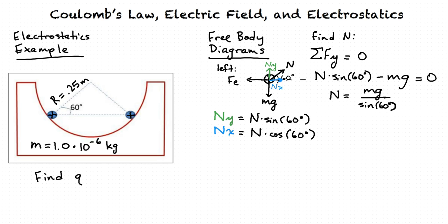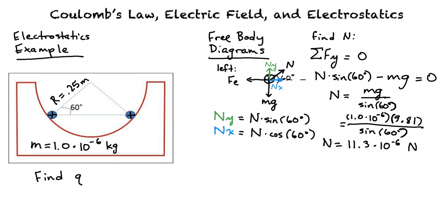Substituting in the given numbers — M equals 1.0×10⁻⁶ kg, g equals 9.81 m/s² — we get N equals (1.0×10⁻⁶ × 9.81) divided by sine(60°). After performing this calculation, we find N equals 11.3×10⁻⁶ newtons.